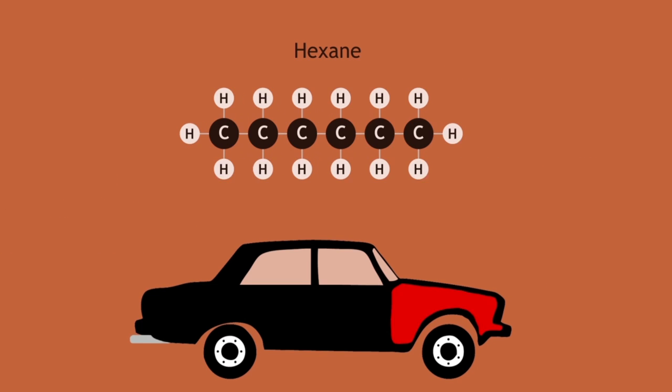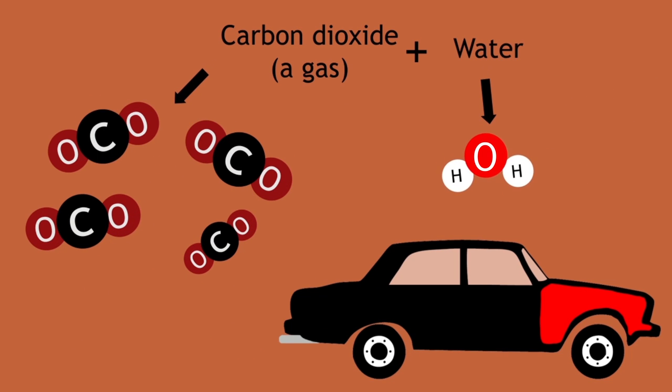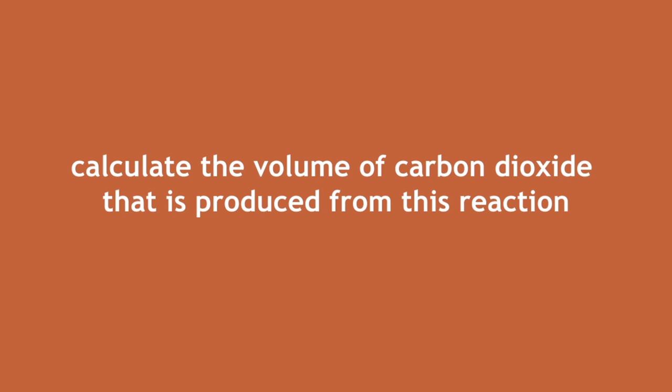When it is combusted in a car engine, it produces carbon dioxide, a gas, and water. We're going to try and calculate the volume of carbon dioxide that is produced from this reaction.